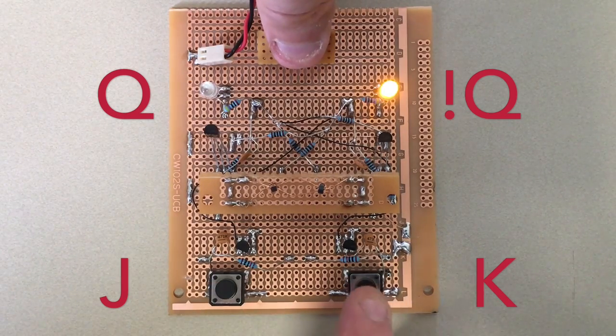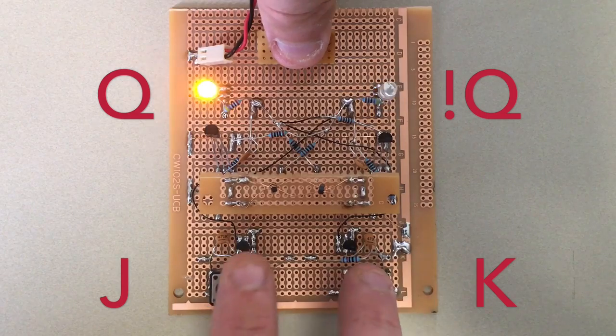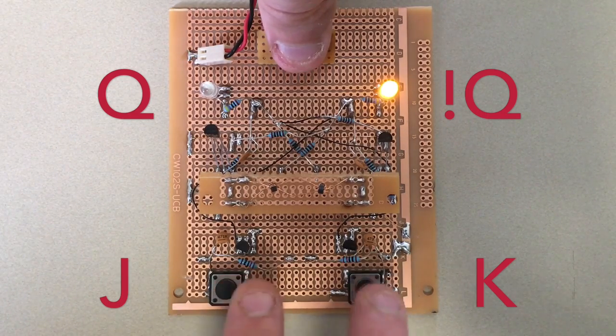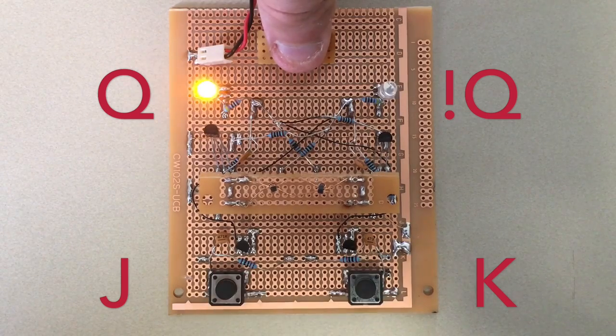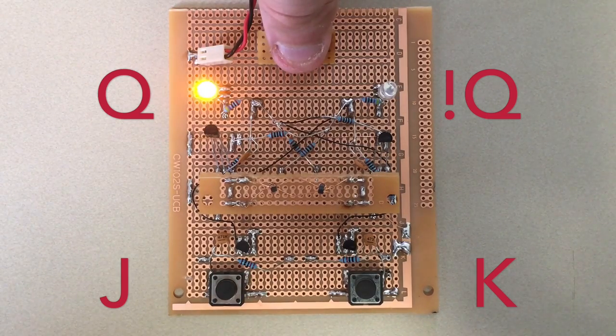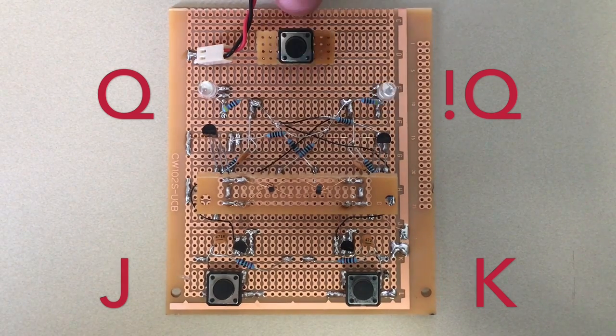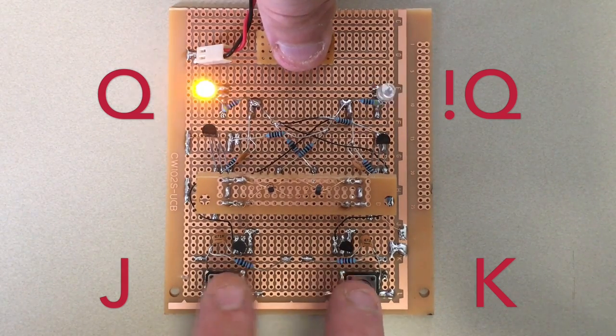The difference between an SR flip-flop and a JK flip-flop is what happens when you set both inputs together. A JK flip-flop will toggle its state, an SR flip-flop will enter an invalid state where Q equals not Q, and that's not very logical, is it? Since Q is never supposed to equal not Q.